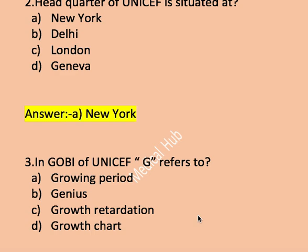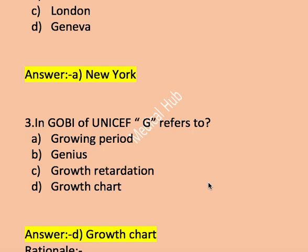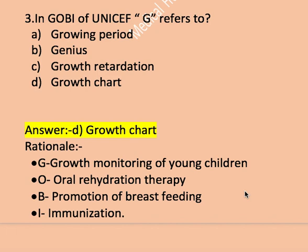Next question, question number three: in GOBI of UNICEF, G refers to — option A growth period, B genius, C growth retardation, D growth chart. Right answer is D, growth chart. In GOBI of UNICEF (United Nations International Children's Emergency Fund), G represents growth chart, meaning growth monitoring of young children.